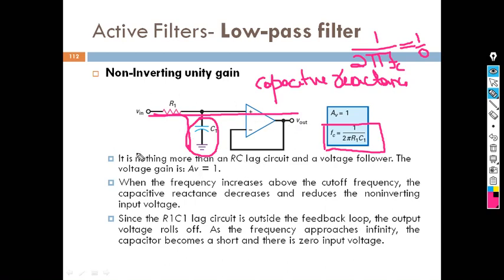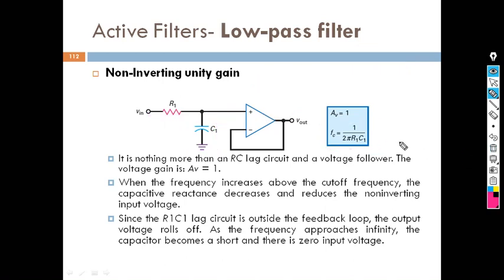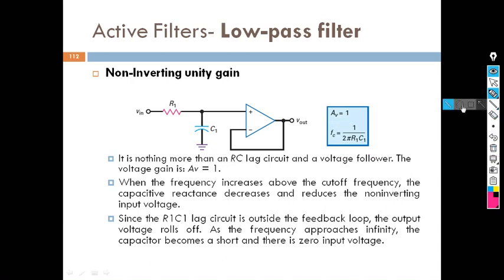Now, how do you design the cutoff frequency? The cutoff frequency fc can be designed using the formula: fc = 1 / (2πRC1). By using this formula, we can decide what is the low cutoff frequency that this particular amplifier can allow. That is called the non-inverting unity gain amplifier. So, moving on to the next one.